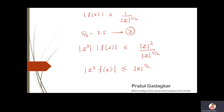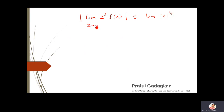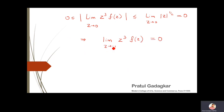Now if we take the limit on both sides as z tends to zero, the limit of |z³ f(z)| becomes less than or equal to zero. But modulus is always greater than or equal to zero, so this means the limit of z³ f(z) equals zero.